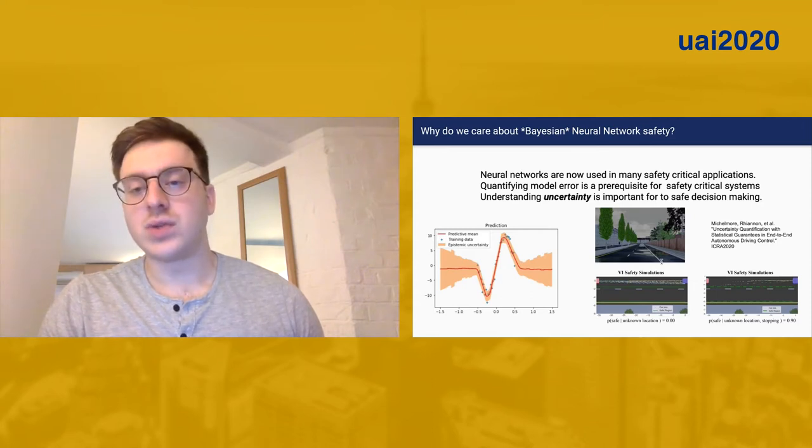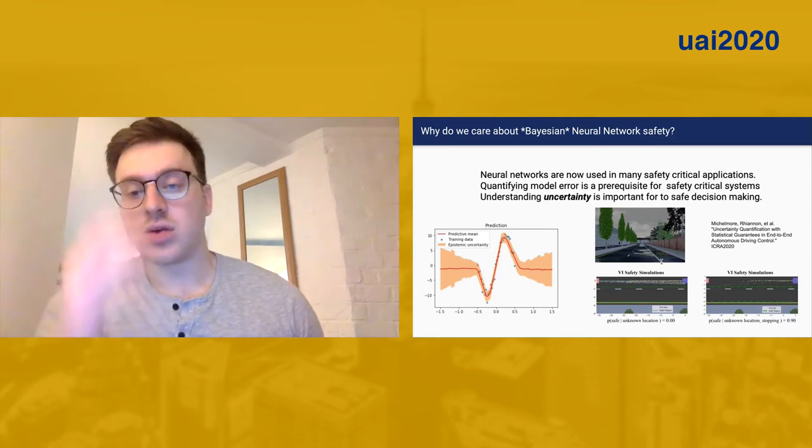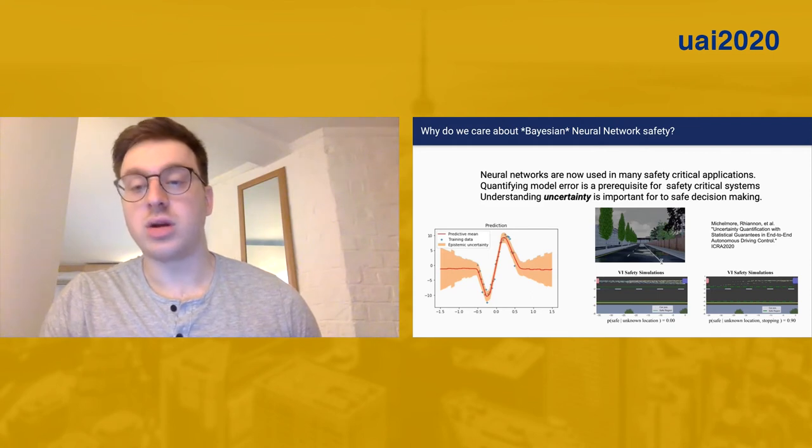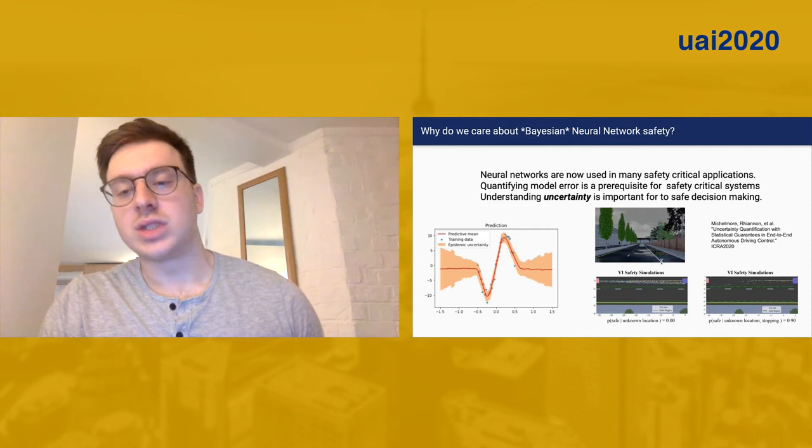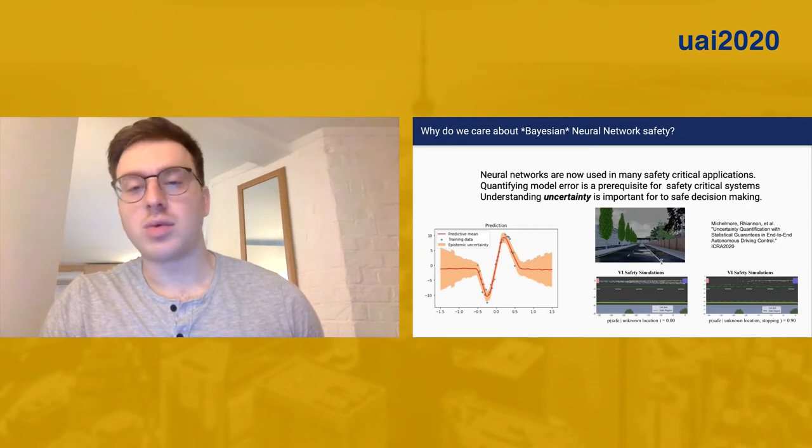This has been shown to be quite useful in recent case studies which show that a BNN controlling an autonomous car can use uncertainty about its situation to stop and avoid a high percentage of collisions.